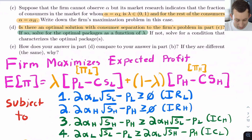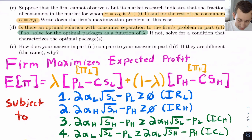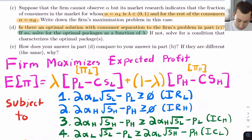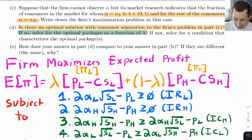Setting up the expected profit maximization problem: there's a λ chance the person is a low type, giving profit (P_L − c·S_L), and a (1 − λ) chance they're a high type, giving profit (P_H − c·S_H). We have four constraints. The individual rationality (IR) constraints for both types say the utility from buying your designated package must be at least as good as doing nothing (utility = 0). The incentive compatibility (IC) constraints say you should prefer the package designed for your type over the other type's package.